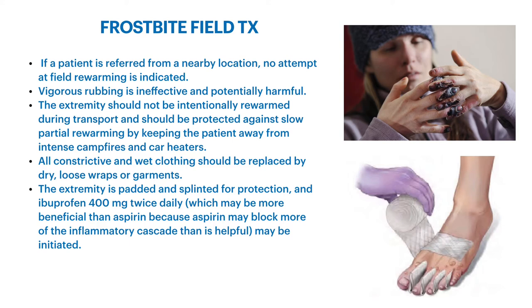All constrictive wet clothing should be replaced with dry, loose wraps or garments. Once they thaw they will swell, so you don't want anything constrictive. Remove rings, bracelets, or any jewelry. Extremities should be padded and splinted for protection — you don't know if there are any other injuries. Ibuprofen 400 milligrams should be given on scene. Make sure to recount to whoever you transfer care to that it was given and at what time. This helps block the inflammatory cascade that can cause thrombus formation in microemboli, causing more damage.